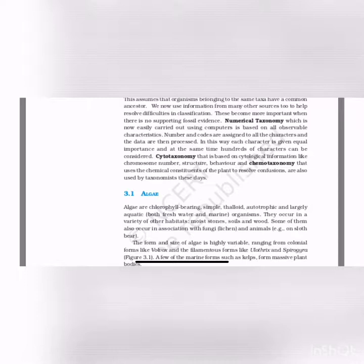Cytotaxonomy is based on cytological information like chromosomal number, structure and behavior — it categorizes organisms that share the same number of chromosomes or the same type of cellular structures. Chemotaxonomy uses the chemical constituents of plants to resolve classification confusion and is also used by taxonomists today.